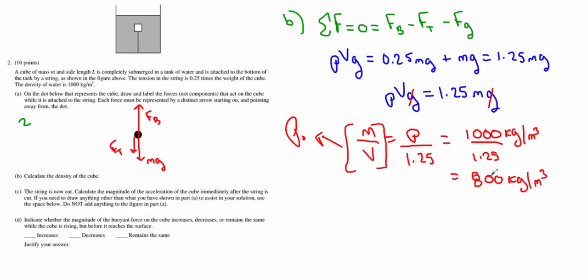I also just want to caution you and double check that it's less than 1000. The density of the object needs to be less than the density of the fluid or else that string wouldn't have been needed at all. It would have been sinking. Part B was worth 3 points.